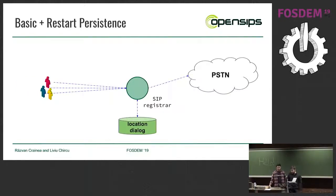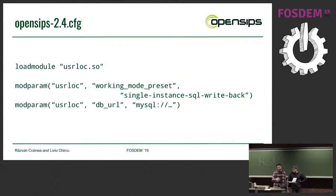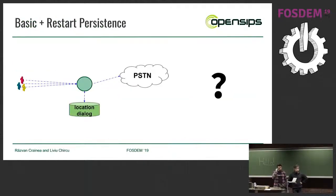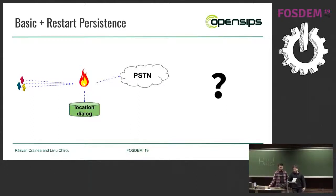We can add another layer on top: database persistence. That's just a couple of lines of config — change the user location mode and hook in a MySQL URL, and we're good to go. But what's still wrong with this? It can still catch fire. If that server goes down, you will run into more downtime. You have to answer to your boss, or maybe even your clients.